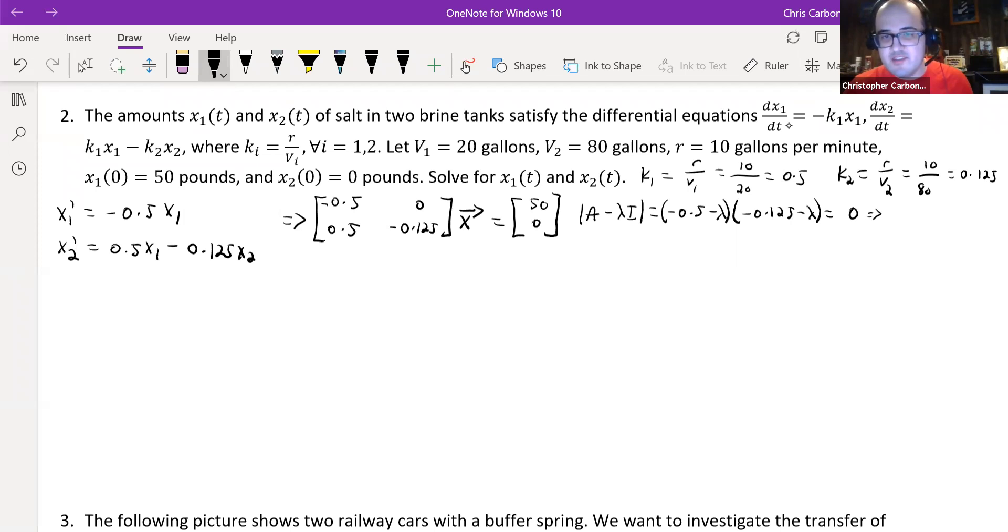This implies for us that lambda₁ is going to be negative 0.5, and our lambda₂ is going to give us negative 0.125, which means we have our two cases based on our two lambdas.